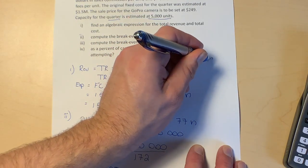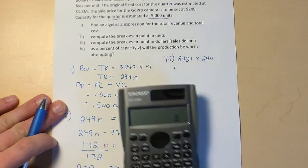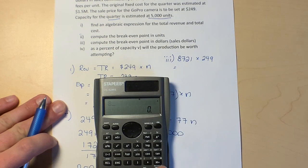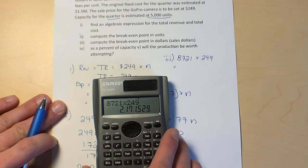We know we need 8,721 units to break even, and we know that each unit is going to be sold for $249. So if we just multiply those, we're going to get the break-even sales dollars. 8,721 times 249 gives us $2 million.